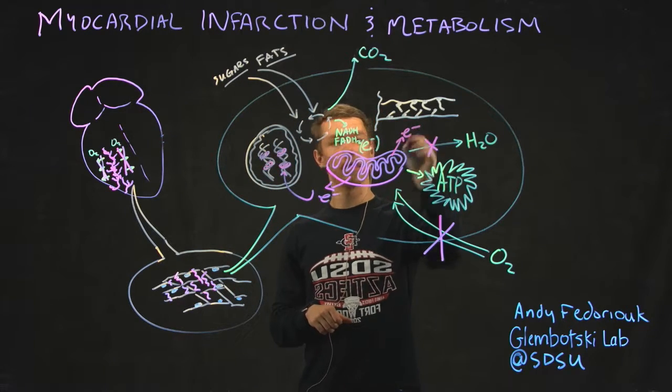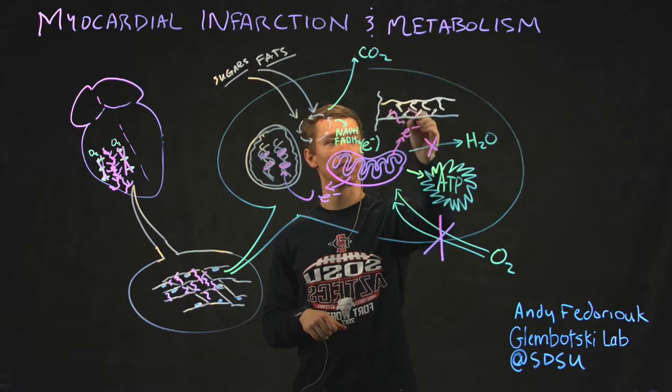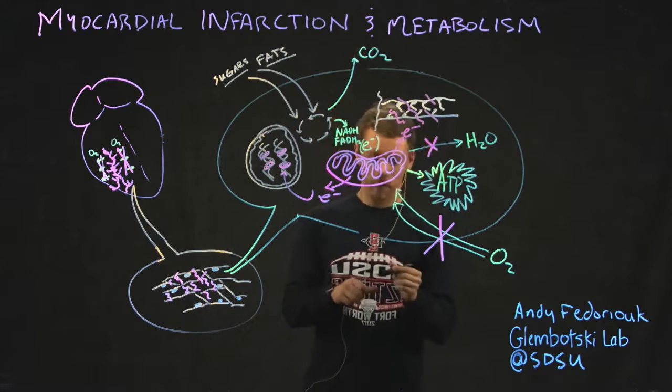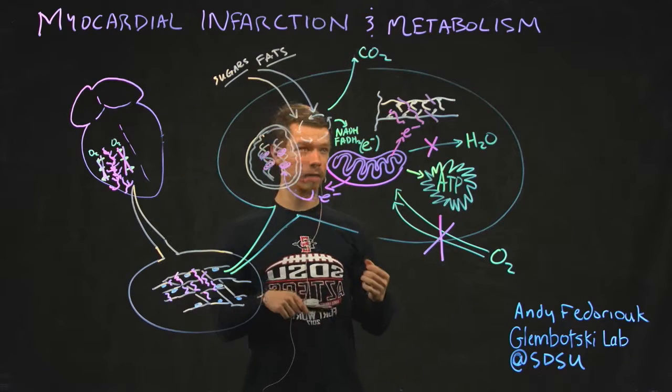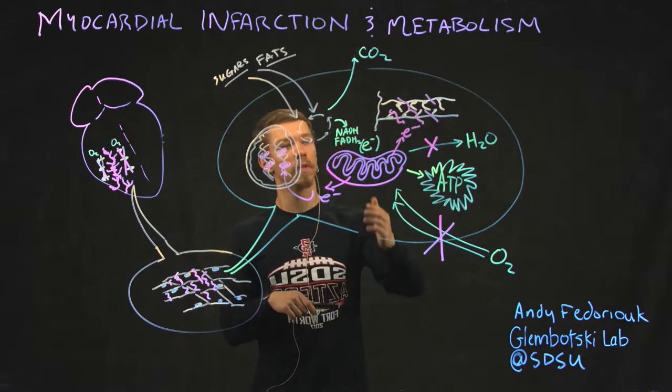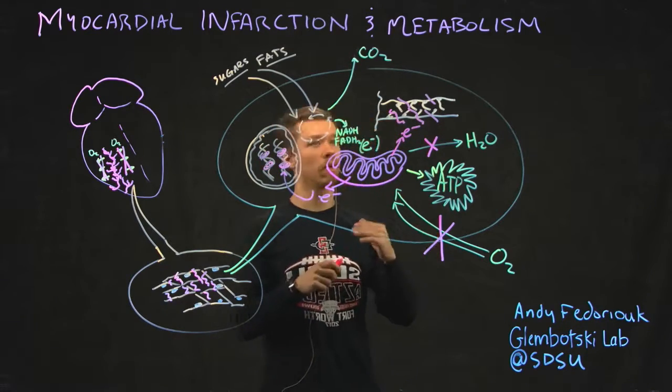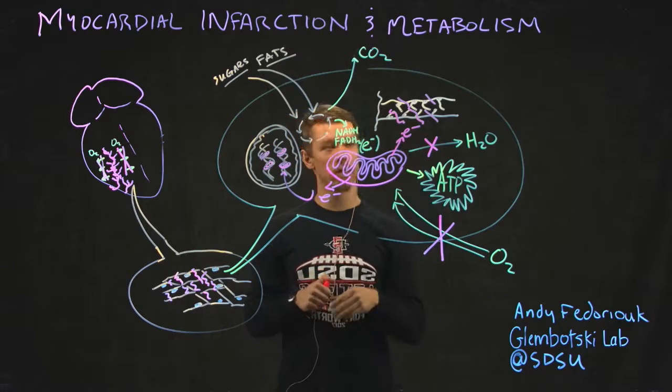Electrons can also leak from mitochondria and start damaging your proteins. As you know, the heart cell is full of proteins that enable the cell to contract, and so the heart can function as a pump. Well, these proteins have amino acids, and they're also prone to damage by these electrons.